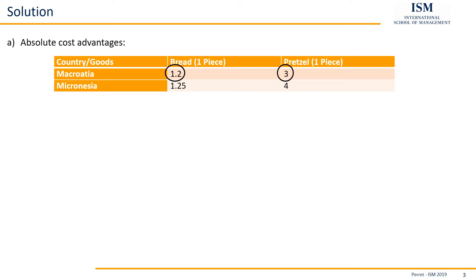Under this condition trade could not occur, so what we are going to focus on instead are comparative cost advantages. For these we first need the opportunity costs, which we get relatively easily — we consider for each country how much of the other unit they have to give up to produce one more unit of the corresponding good.